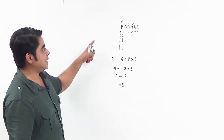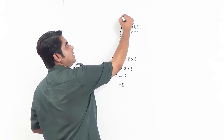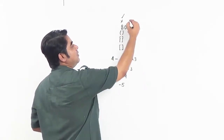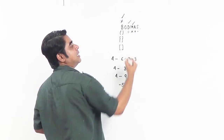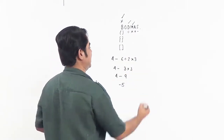So what BODMAS stands for is: you will always solve the quantity in brackets first, then you will look for divisions, then multiplications, then addition, then subtraction.